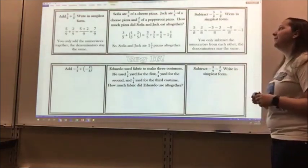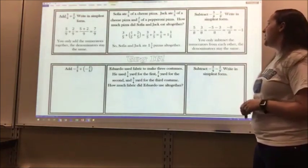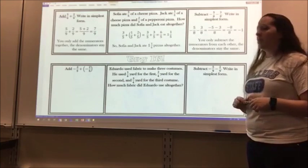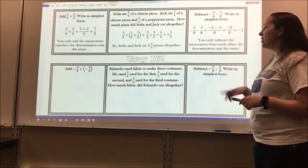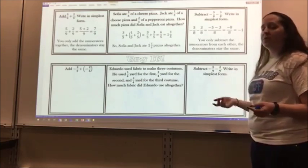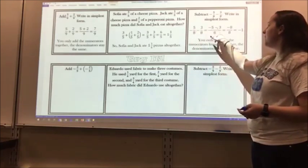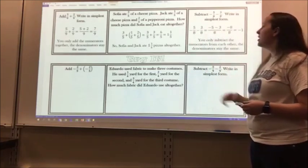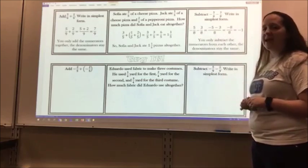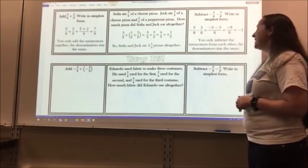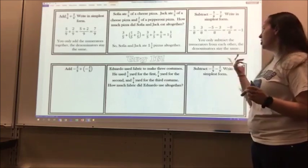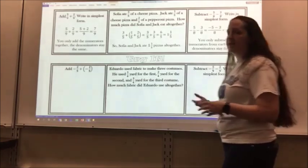Then I have subtract negative 5 eighths minus 3 eighths, write in simplest form. Negative 5 eighths minus 3 eighths, so I'm subtracting. Negative 5 minus 3 gives me negative 8. My denominator stays the same of 8. Negative 8 over 8 is negative 1 when I simplify. You only subtract the numerators. Remember, the denominators stay the same.